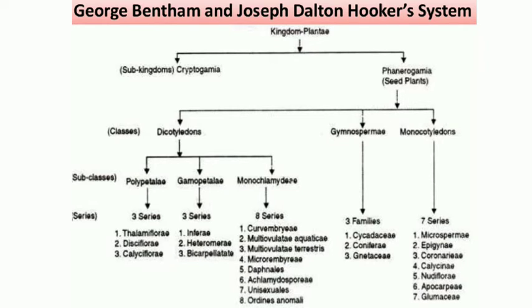Monochlamydae has eight series: Curvembryae, Multiovulatae Aquaticae, Multiovulatae Terrestres, Microembryae, Daphnales, Achlamydosporae, Unisexuales, and Ordines Anomali — eight series under Monochlamydae.